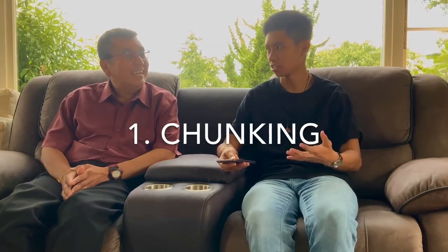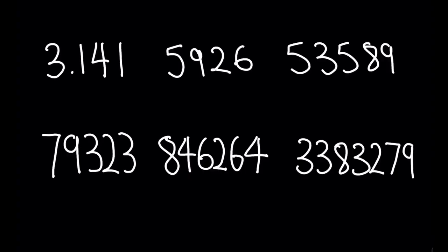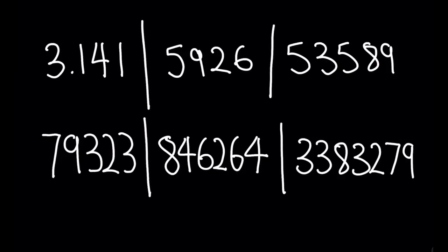Could you please elaborate on chunking? Okay, chunking. There are altogether like 40 or 50 numbers. What I did is that I break them down into different parts. It could be 4, 5, or 6.